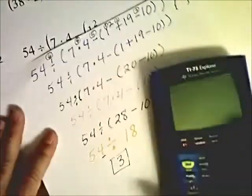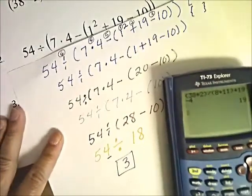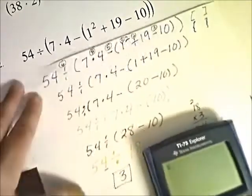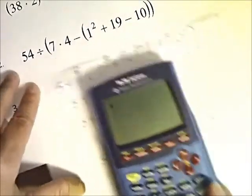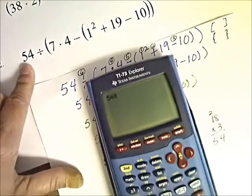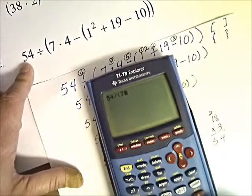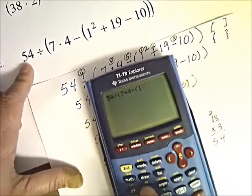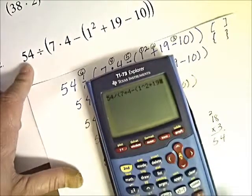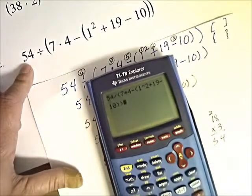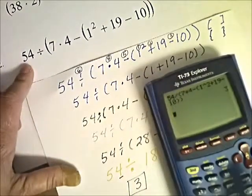Let's check this on the calculator. We're going to enter it exactly as written: 54 divided by — parenthesis — 7 times 4, subtract, inner parentheses, 1 caret 2 — the second power — plus 19, minus 10, close inner parentheses, close outer parentheses, equals — and you see that our answer is 3, and that's what we got, 3.